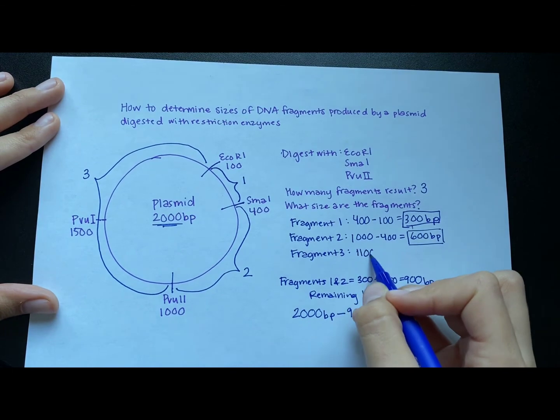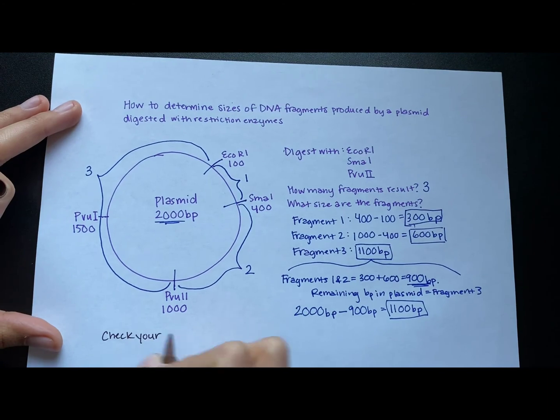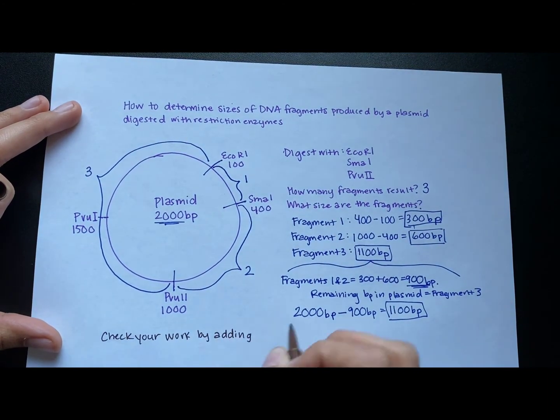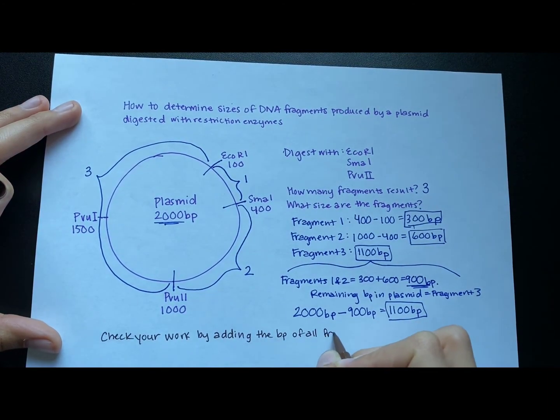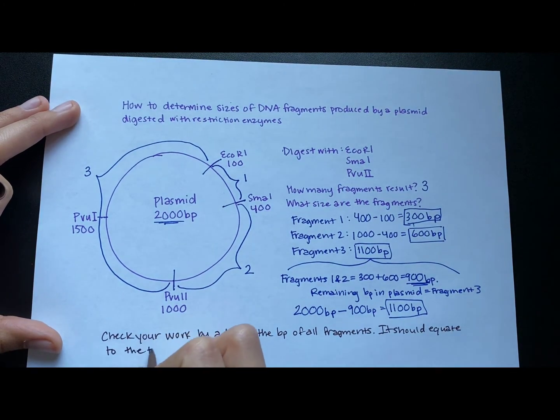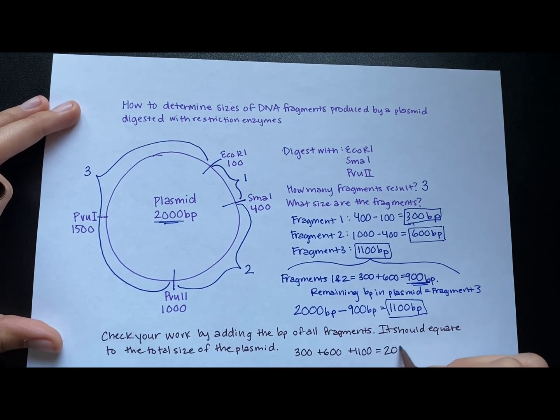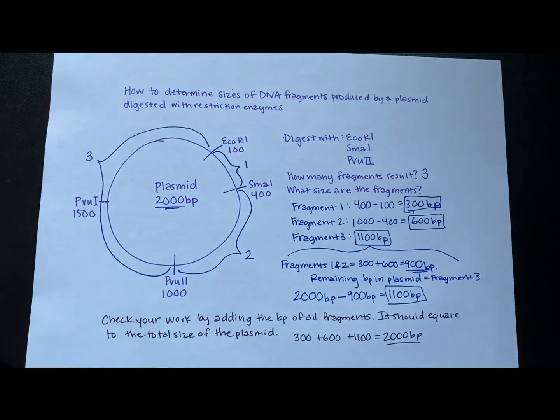Now this is not a part of the problem, but if you ever want to check your work, you can add up the base pairs of all of the fragments that you just found. And it should equal the total size of the plasmid. So let's just add them up. Fragment one is 300, fragment two is 600, fragment three is 1,100. And that gives you 2,000 base pairs, the size of the entire plasmid.